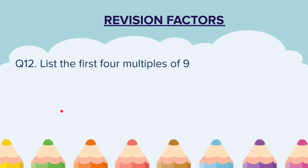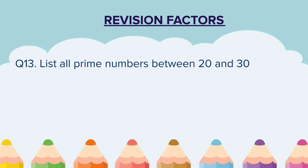Question 12: List the first 4 multiples of 9. Question 13: List all prime numbers between 20 and 30.